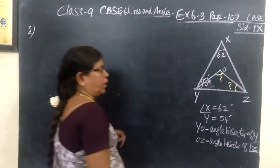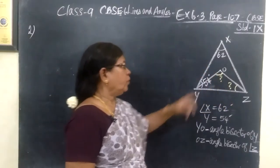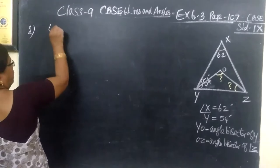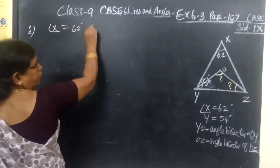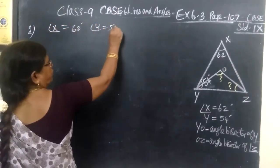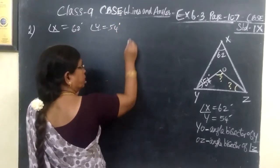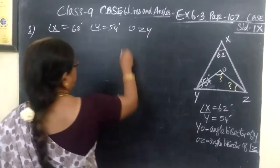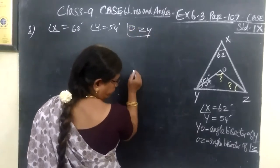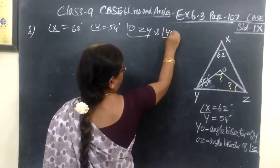You are given angle X equal to 62 degrees and angle Y equal to 54 degrees. You want to find angle OZY and angle YOZ. These two angles you have to find.